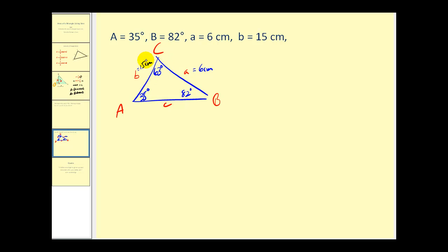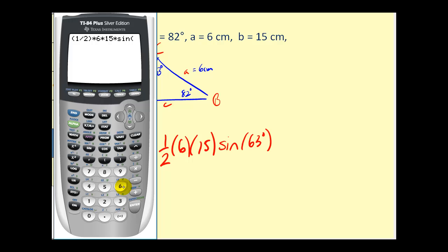This is the angle we need in order to apply that area formula, because this is the included angle from the information we were given. So the area of this triangle will be equal to one half times the product of the two sides that include the angle: 6 centimeters times 15 centimeters times the sine of 63 degrees. The area is approximately 40 square centimeters.